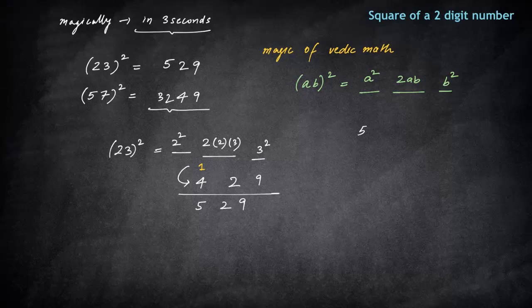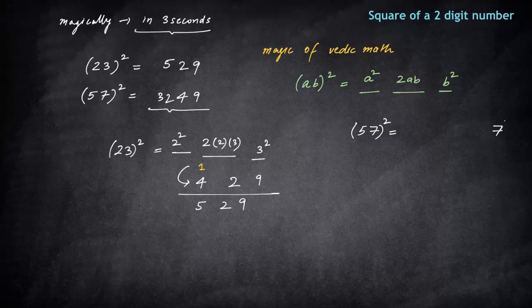Let's see 57 square. How I have solved 57 square? 57 square will be, first spot will be filled by 7 square. Let's just write 9, and there will be a carry forward of 4.